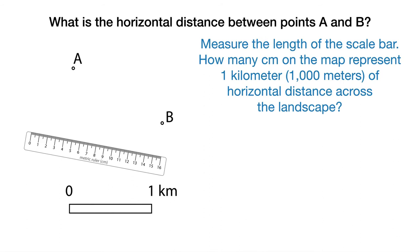We need to measure the map length of the bar scale that's printed on the map to determine the number of centimeters on the map that represents 1 kilometer or 1,000 meters of horizontal distance in the field across the landscape.